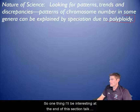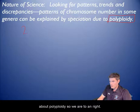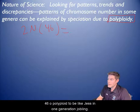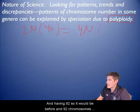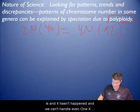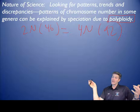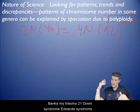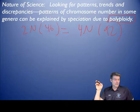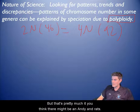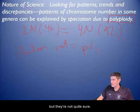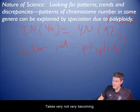One interesting thing at the end of this section — polyploidy. We are 2n, right, 46 chromosomes. So polyploid would be just in one generation doubling and having 92, so it would be 4n, 92 chromosomes. A human with 92 chromosomes sounds wild, and it hasn't happened — we can't handle even one extra chromosome, like trisomy 21 Down syndrome, Edwards syndrome trisomy 18. There might be an Andean rat that can do a polyploidy thing, but they're not quite sure.